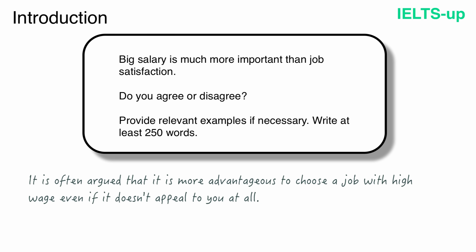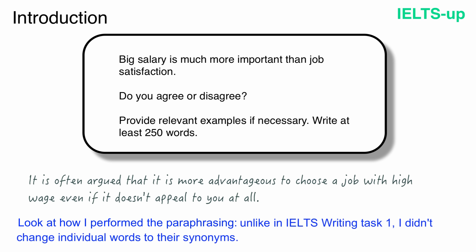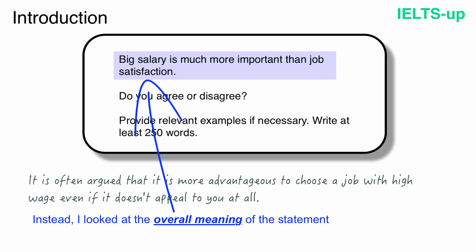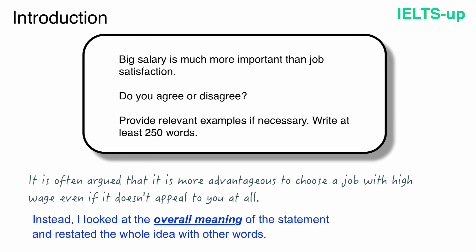'It is often argued that it is more advantageous to choose a job with high wage, even if it doesn't appeal to you at all.' Look at how I performed the paraphrasing. Unlike in IELTS Writing Task 1, I did not change individual words to their synonyms. Instead, I looked at the overall meaning of the statement and restated the whole idea with other words.